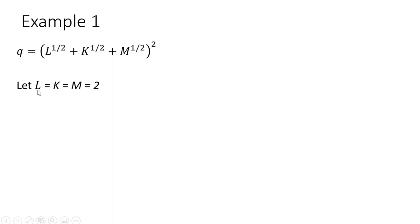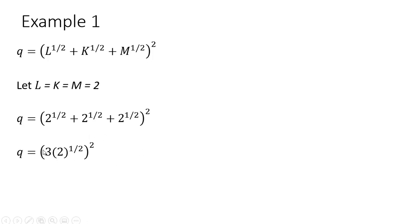Example 1. We're going to let L, K, and M equal 2. We don't have to let all the inputs equal the same value, but for simplicity we'll do that. Plugging in our values for L, K, and M into the production function and simplifying, we get: 3 squared is 9, and 2 raised to the 1/2 power squared is just 2, and this will equal 18.